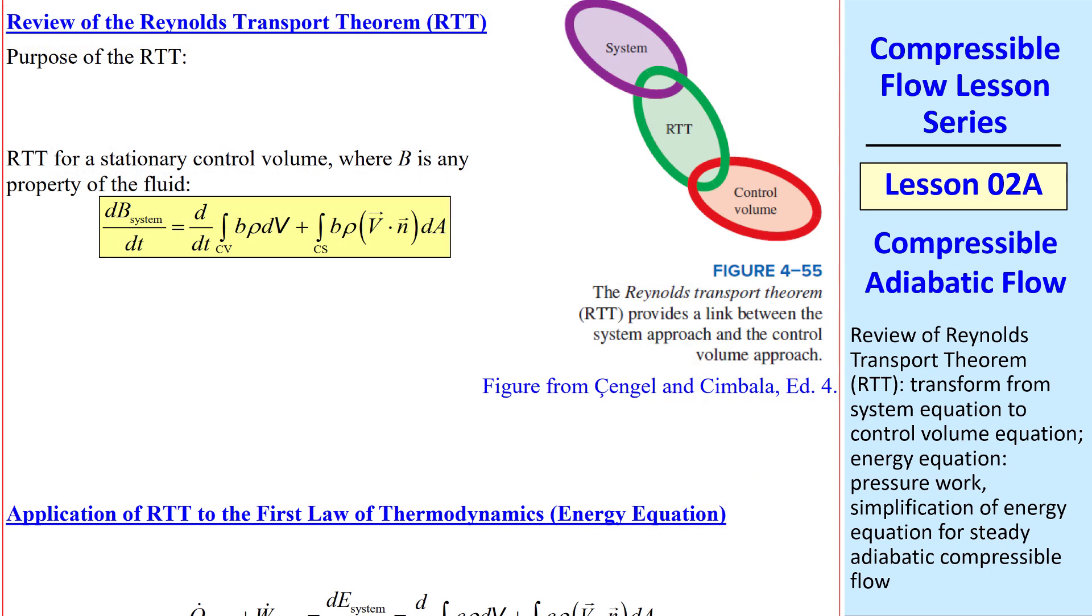First, a review of the Reynolds Transport Theorem, or RTT. The purpose of the RTT is to convert fundamental conservation equations from a system to control volume. In my fluids book, I created this image of chain links. The Reynolds Transport Theorem is a link between the system approach and the control volume approach.